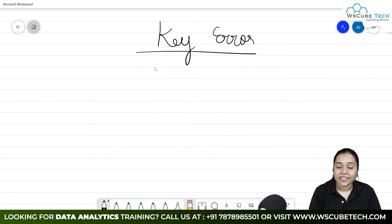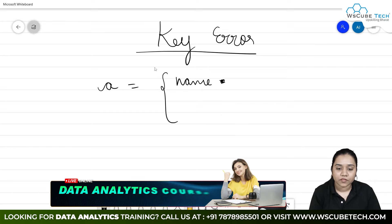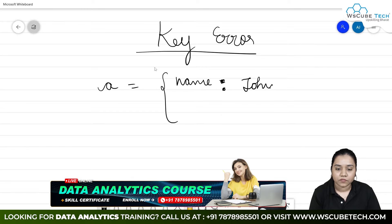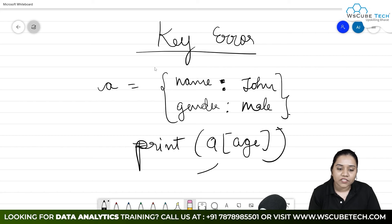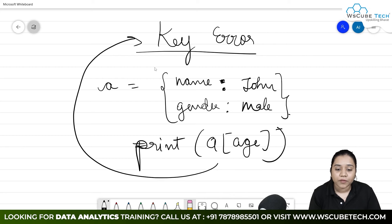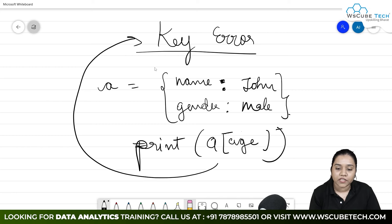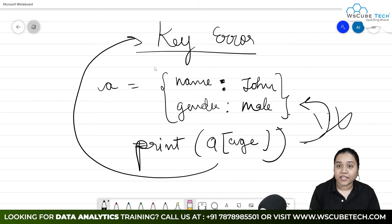Next, we have key error. Let's discuss that. First, create a dictionary a with keys 'name' colon 'John' and 'gender'. Now if I try to print a['age'], it will generate a key error, because the 'age' key does not even exist. If I had written 'name', it wouldn't have generated any error. Because 'age' does not exist inside this dictionary, it generates a key error.